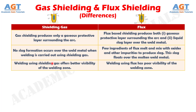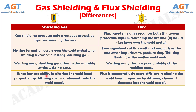Number 3: Welding using shielding gas offers better visibility of the welding zone, whereas welding using flux has poor visibility of the welding zone. Number 4: Gas shielding has low capability in altering the weld bead properties by diffusing chemical elements into the weld metal, whereas flux is comparatively more efficient in altering the weld bead properties by diffusing chemical elements into the weld metal.